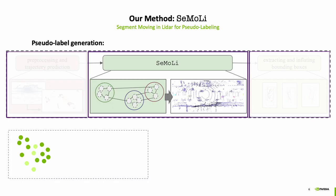Starting from our filtered point cloud and our per-point trajectory predictions, we view each point in the point cloud as a node in a graph. We then add an initial set of edge hypotheses based on proximity to our graph, and add edge and node features based on motion patterns and position.